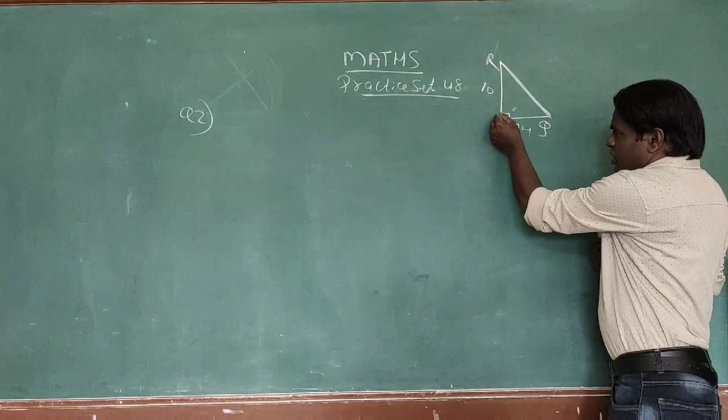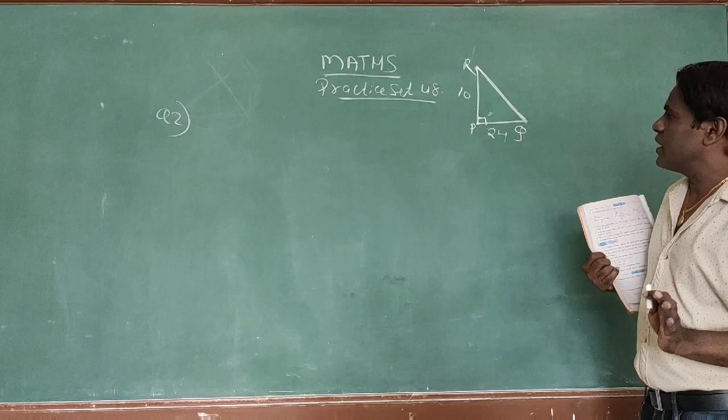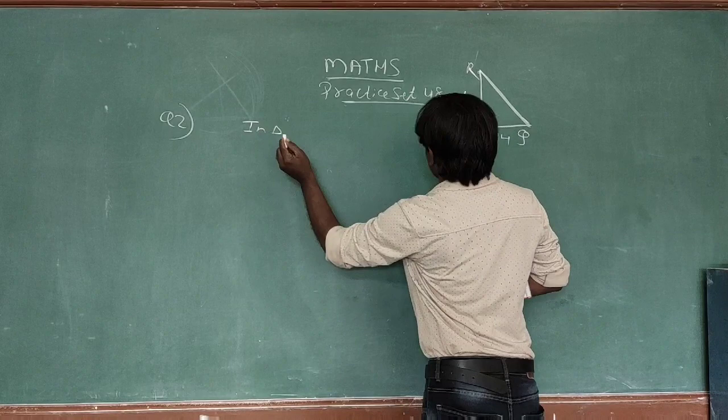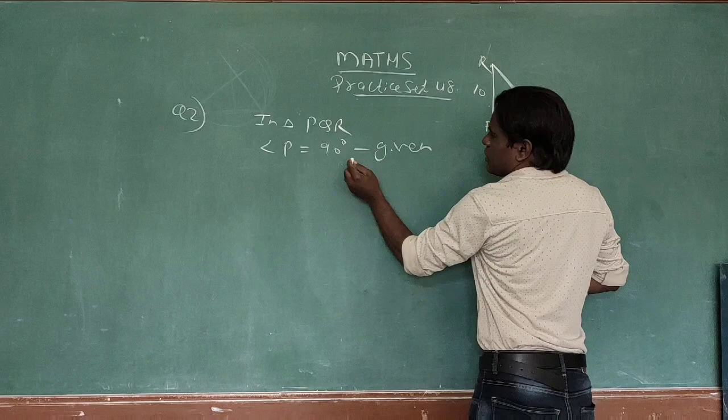This is a right angle triangle, so we can apply Pythagoras theorem. In triangle PQR, angle P equals 90 degrees — this is given.